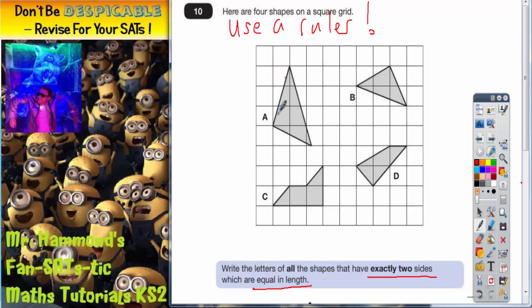You can actually measure each side with a ruler and if there's two that's equal, then that is a shape that you are interested in that you need to write on the answer space. So on shape A you should, if you measure them, find that none of those three sides are equal so we're not interested in that one.